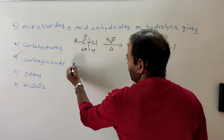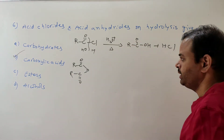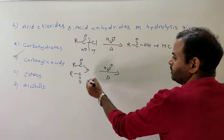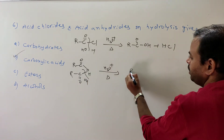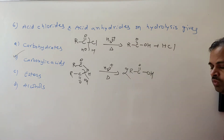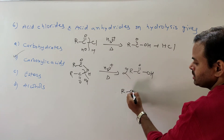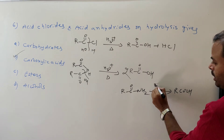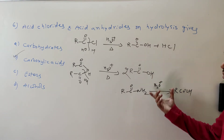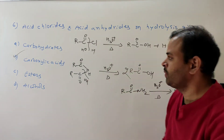Acid anhydride is RCO-O-COR. On hydrolysis with H3O+ and heating (adding H-OH), two moles of RCOOH are formed. So whether it is acid chloride, acid anhydride, or amide RCONH2, all these compounds on hydrolysis give carboxylic acid only.